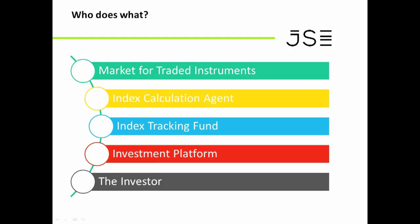The question is: what do you buy? In the traditional model, an asset manager would pick which stocks they think are going to do well based on whatever metric they're using — a style approach, a value approach, or a growth approach — and they'd pick individual stocks and invest the fund accordingly. Mike will speak about the historical performance of those kinds of managers, called active fund managers, versus the passive manager, which is an index tracker.